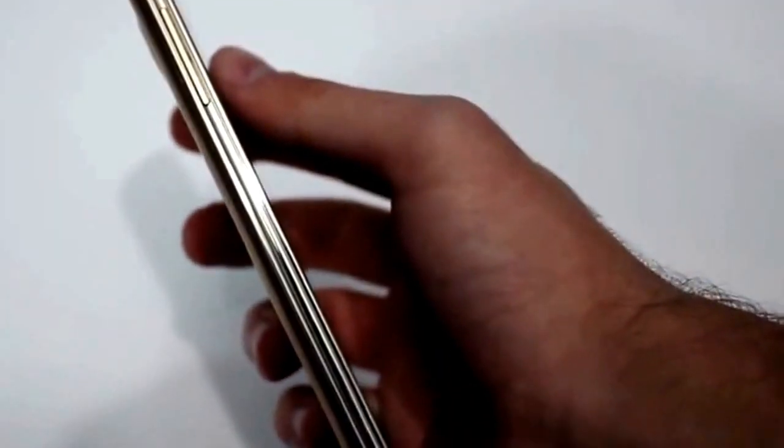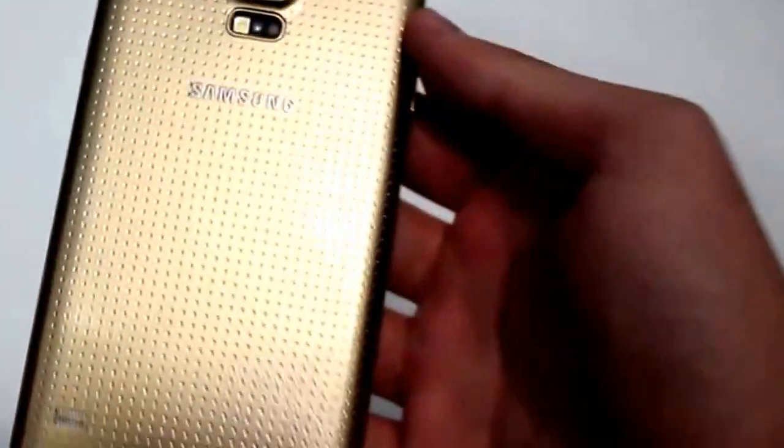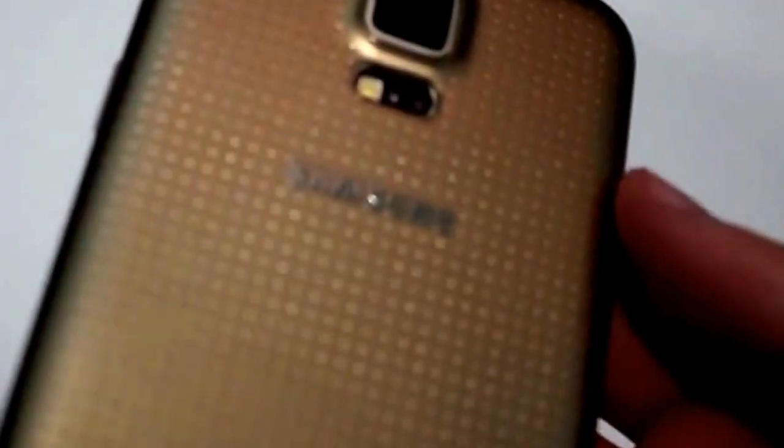One thing to note is that Unbox Therapy tried to put the phone back in place to fix the bending and it didn't work and the screen got cracked. But it's another story with the Galaxy S5.